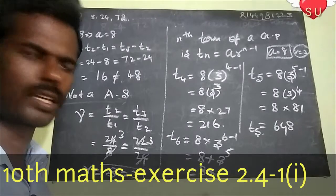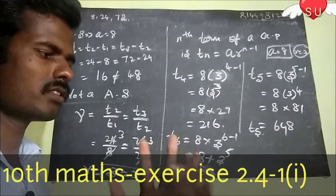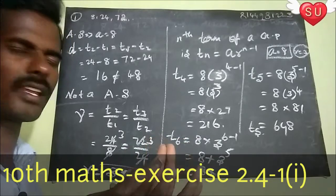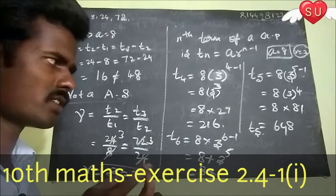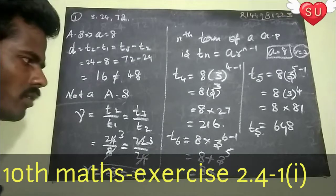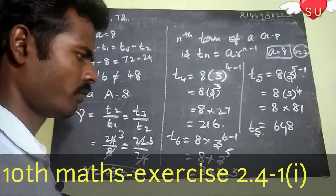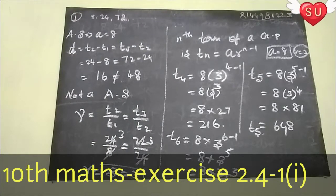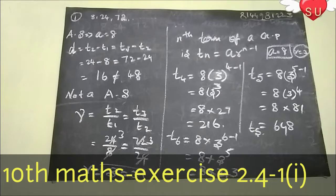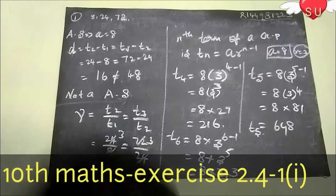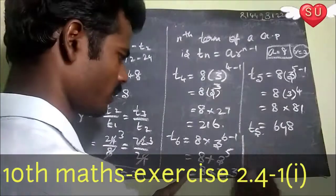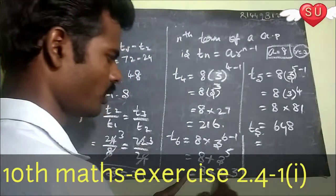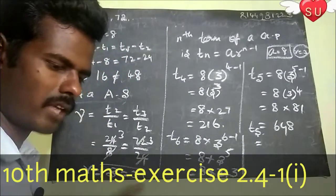Calculating 3 to the power 5: 3 times 3 is 9, 9 times 3 is 27, 27 times 3 is 81, 81 times 3 is 243. So T6 equals 243 into 8, which equals 1944.